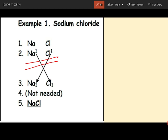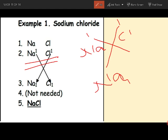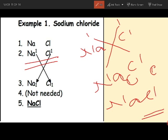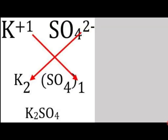Let's take the example of sodium chloride. The valency of sodium is 1 and the valency of chlorine is 1. We crisscross these values: Na¹Cl¹. Since both are 1 and we don't write subscript 1, the formula becomes NaCl.